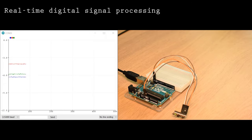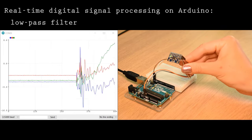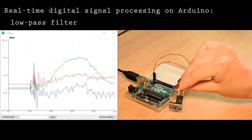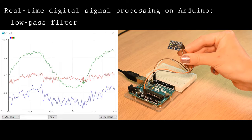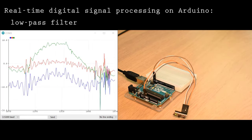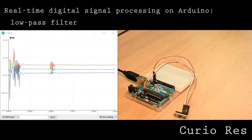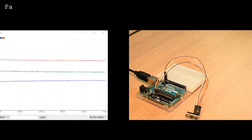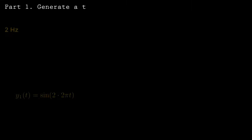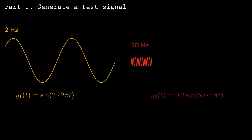In your Arduino project, you'll be using sensors, and those sensor measurements probably have noise. In this video, I'll show you how to design and implement a low-pass filter that's just right for your project. It's easier to use an artificial signal to test the filter, so we'll start by creating one.